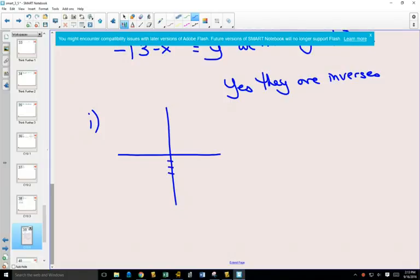The original line was y equals 3x minus 6. It has a y-intercept at negative 6, slope of 3, up 3 over 1, up 3 over 1. So here is y equals 3x minus 6.